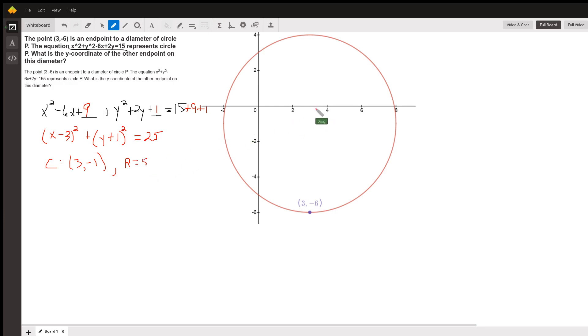So here's the center at 3, minus 1. So it so happens that the center of the circle and the point 3, negative 6 lie on a vertical line.